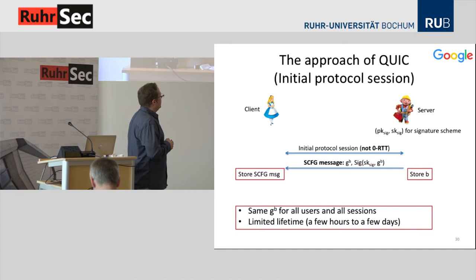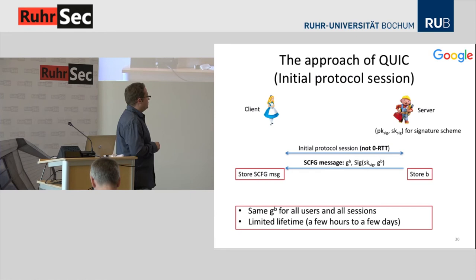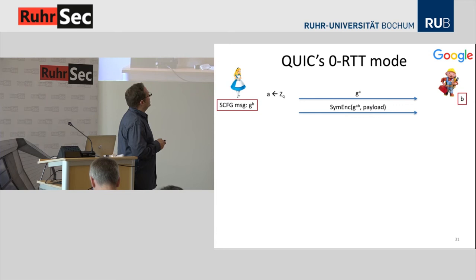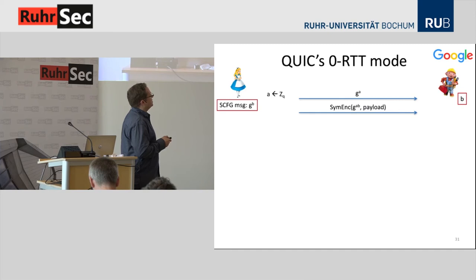The client stores the server config message and the server remembers the exponent. QUIC uses the same Diffie-Hellman share for all users and all sessions, and it has a limited lifetime — typically ranging from a few hours to a few days. Once the server config message has been transmitted to the client, the zero-round-trip-time mode can be executed. Alice picks a random exponent, sends her Diffie-Hellman share G^A to the server, and gets a key determined by G^A and G^B from the server configuration message. This key can then protect the actual payload message.